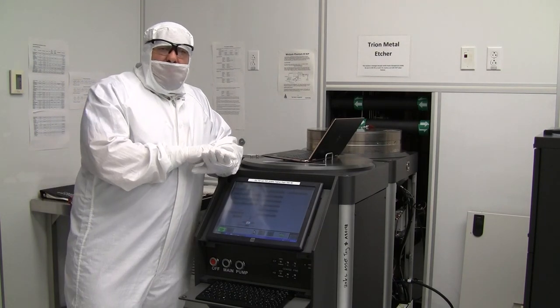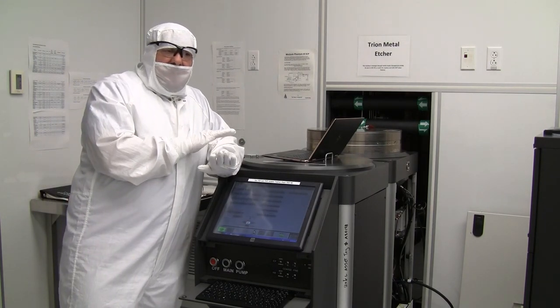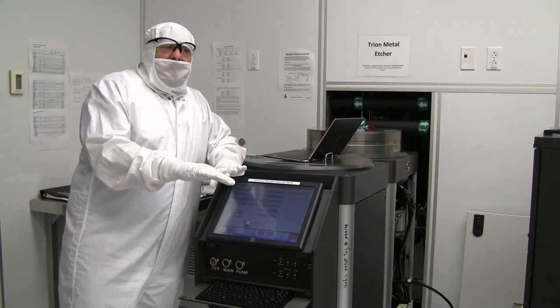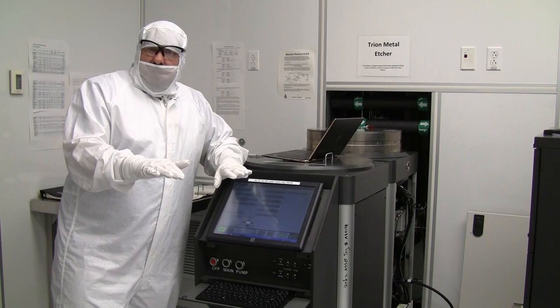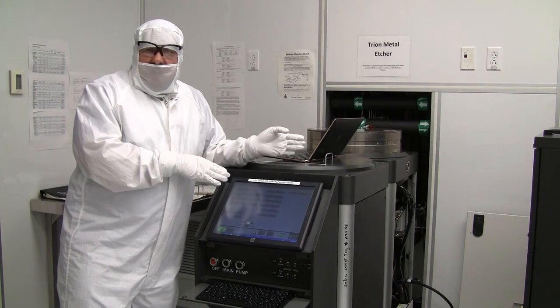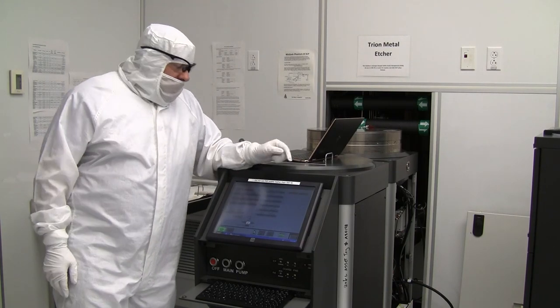We also have oxygen in here, so you can etch organics. You can process, in principle, you could process and etch a metal and then immediately remove the photoresist with an oxygen plasma without even taking it out of the reactor if you had a very well characterized process.